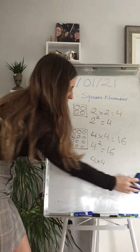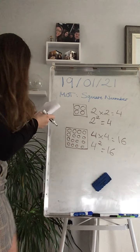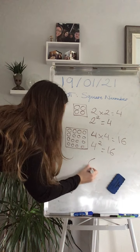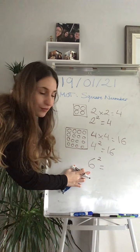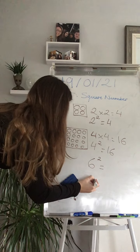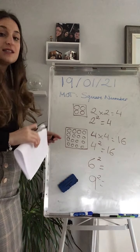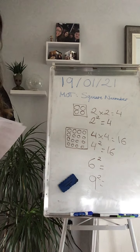So can you try to do this for me? Could you do the answer of 6 square? Remember that we times 6 by itself once. And can you try to do 9 square? Go for it. Play it again when you're ready.